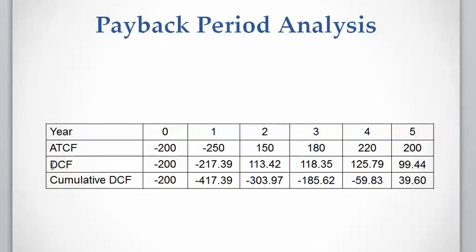First, we need to calculate the discounted cash flow by discounting each year's cash flow at 15 percent. Then we calculate the cumulative discounted cash flow: for the present time it equals the cash flow at present time; for year one it equals the cumulative discounted cash flow at year zero plus the discounted cash flow of year one, and so on for subsequent years.